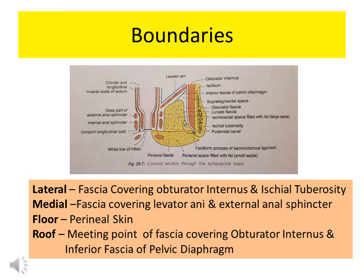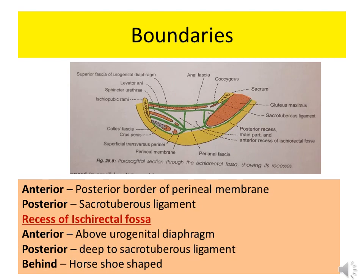The roof is tapering. It is formed by the meeting point of the fascia covering the obturator internus and the inferior fascia of the pelvic diaphragm.